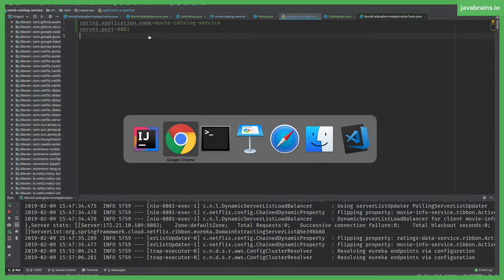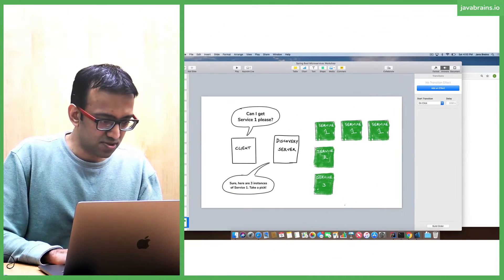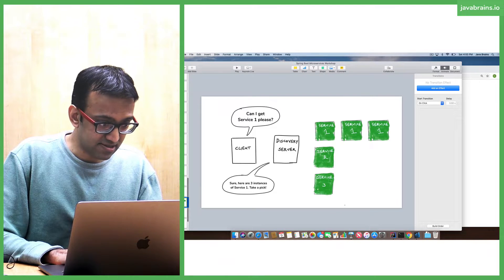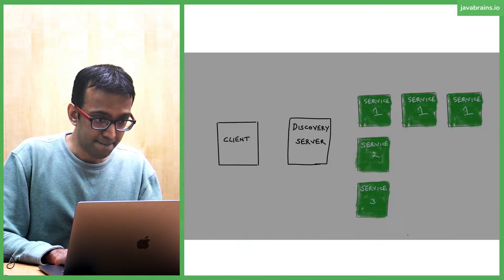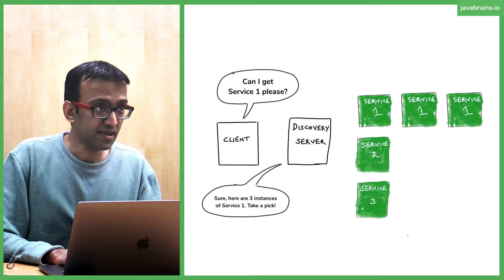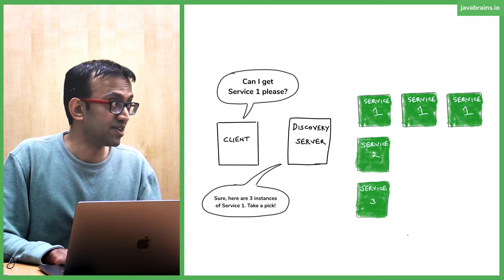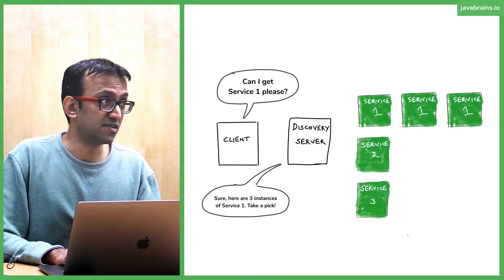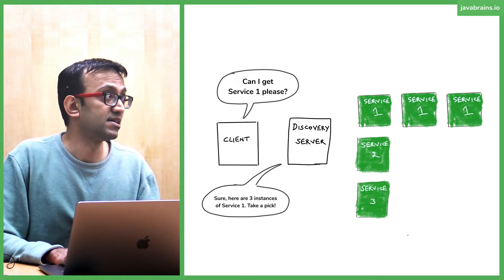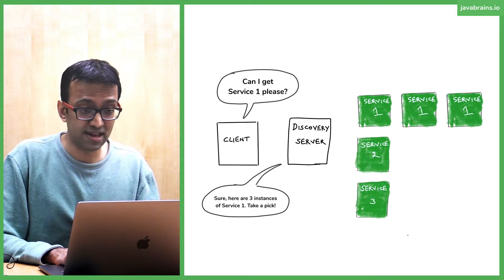All right. Let's switch to the slides. This is what's happening here with what we saw. We ran two instances of a microservice. Discovery server returned multiple instances, and then there was a client-side load balancing that happened.